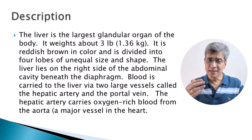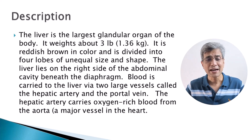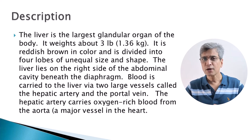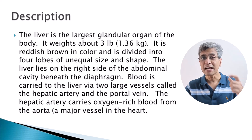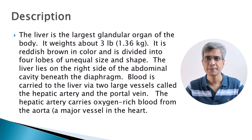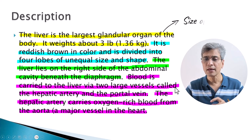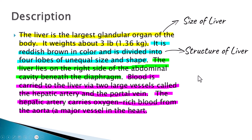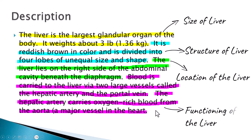At first glance, it might seem like everything is about the liver and therefore there is no need to split the information. But if you take a closer look, this piece of text is actually a collection of four different points: the first answers what is the size of the liver, the second talks about the structure of the liver, the third talks about the location of the liver, and the fourth talks about the functioning of the liver. So these four points are all dumped together in one piece.